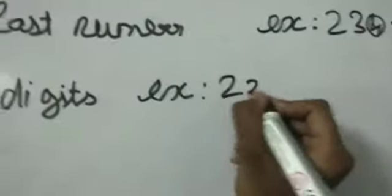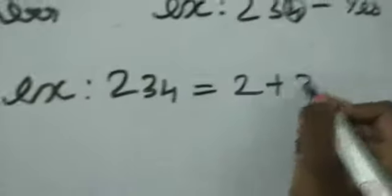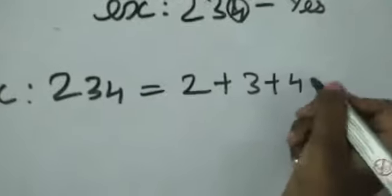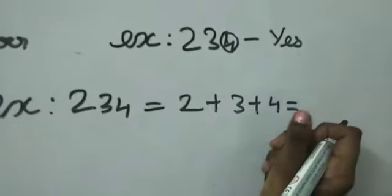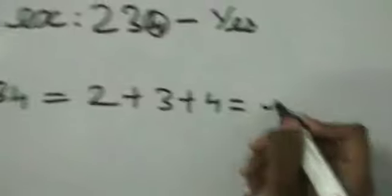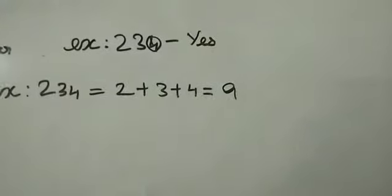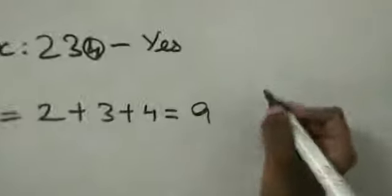2 plus 3 plus 4 equals 9. 9 is coming in 3 table, so it is divisible.